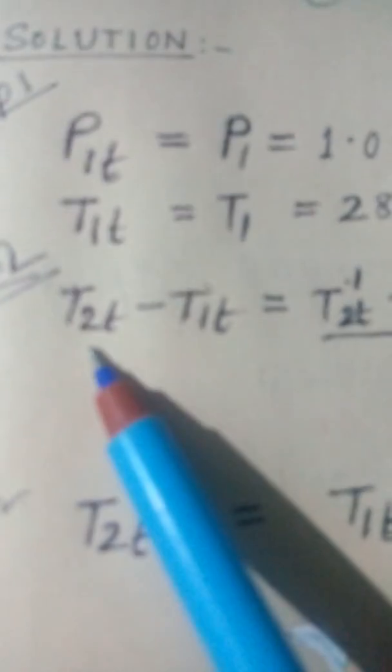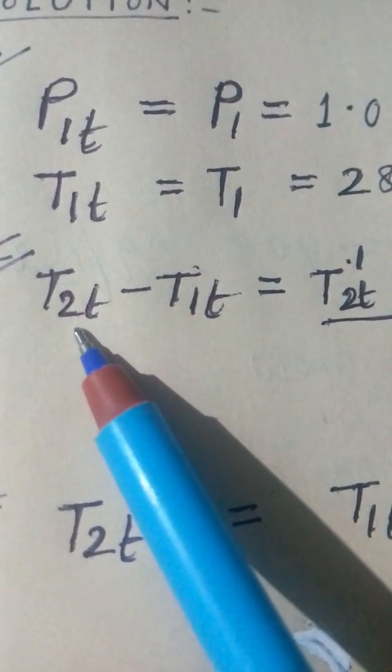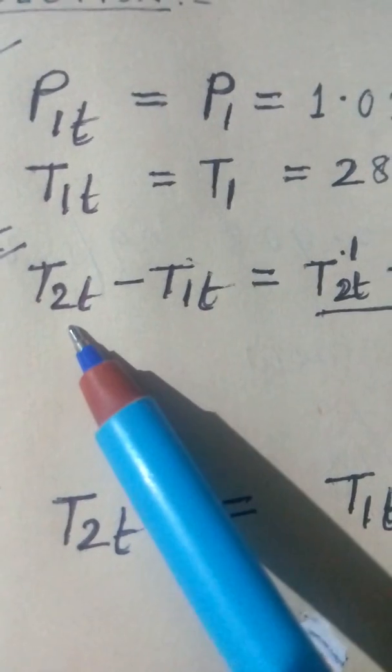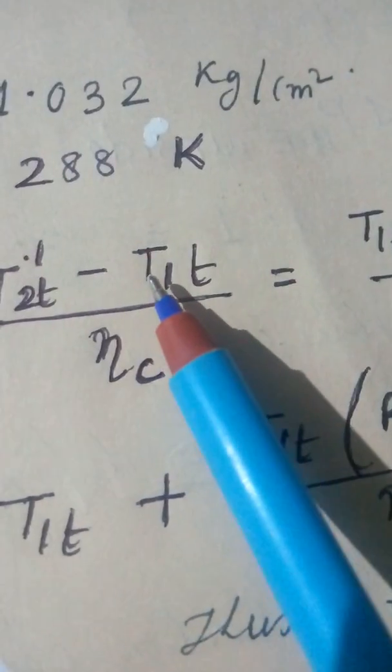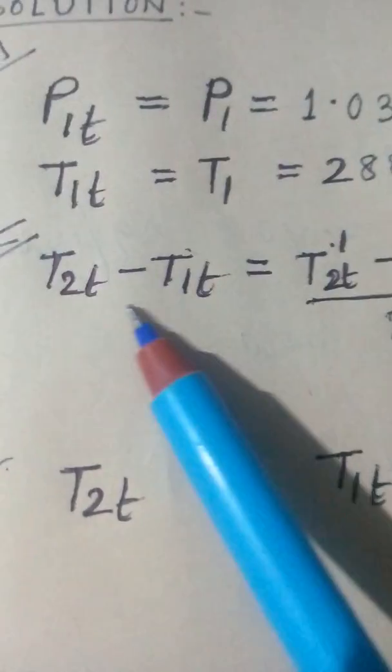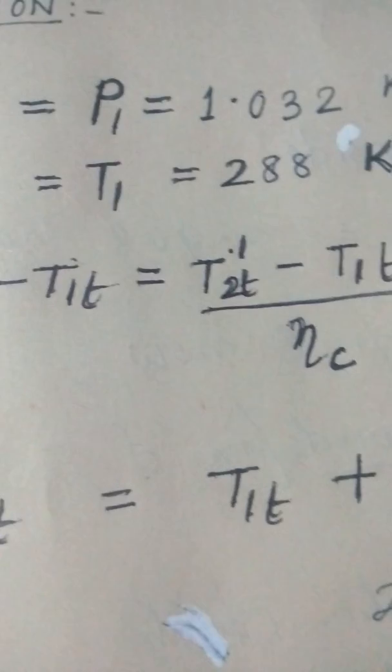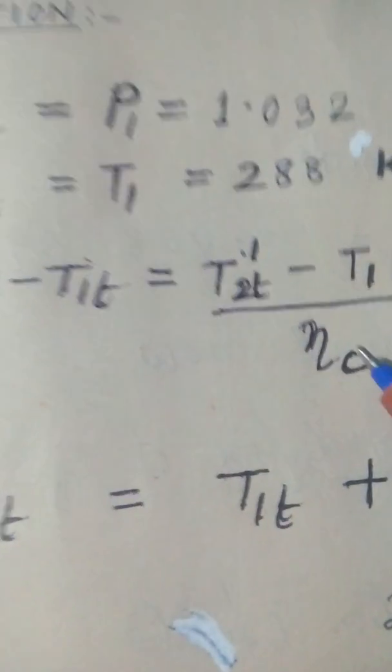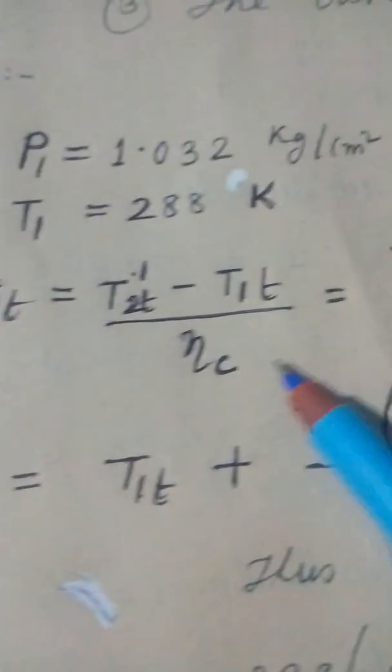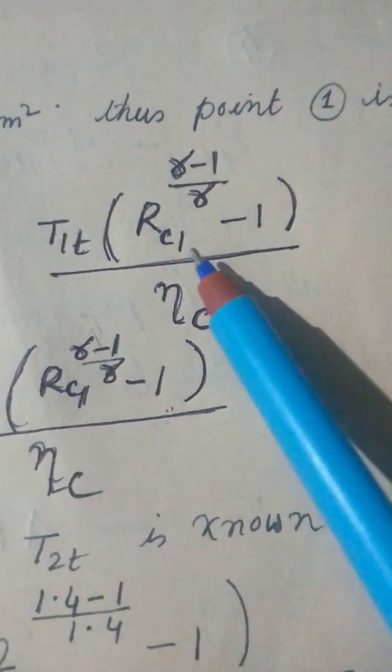Here, to solve this problem you must see my previous videos because the notations are used here with respect to the previous one. T2T minus T1T is equal to T2T dash minus T1T by efficiency of the compressor. This is equation which I have given in the earlier video. You will see the isentropic efficiency of the compressor. Now is equal to, you take common this one, so RC1 to the power gamma minus 1 by gamma minus 1 by NC.